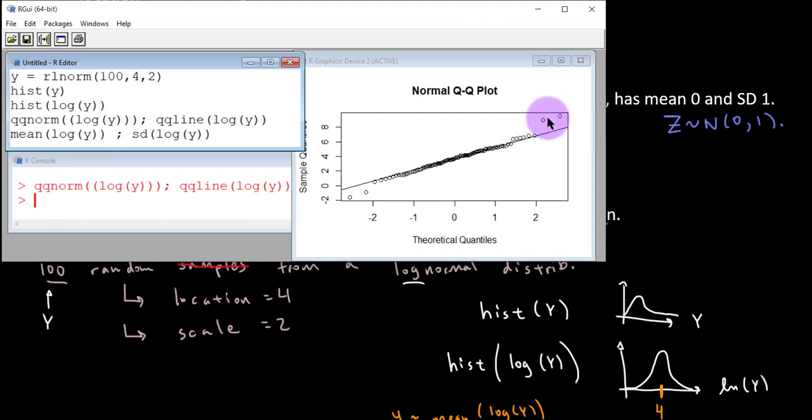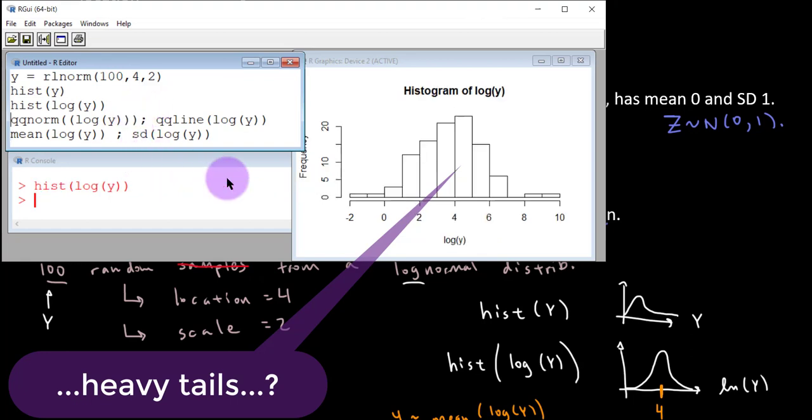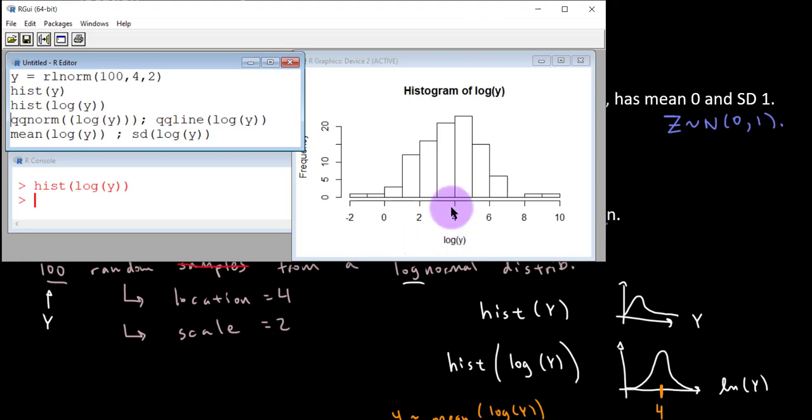Pretty cool. There appears to be some deviation in the tails. And we can probably expect that by looking at that histogram again. It does look like these tails extend out a little further than you would expect from a really nice bell, but pretty dang close. And look, the center of this histogram appears to be roughly 4, doesn't it?